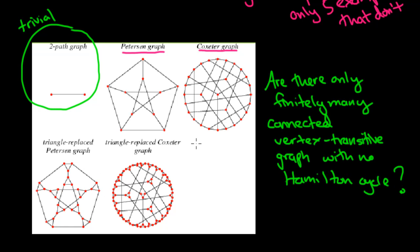So clearly there are five, but are there more, and are there only finitely many more? So maybe the answer is that there are 20 of them, or maybe the answer is that there are only five of them. But the question is, is there an infinite number of them which do not have Hamilton cycles? So that's interesting, and it's very much an open question.